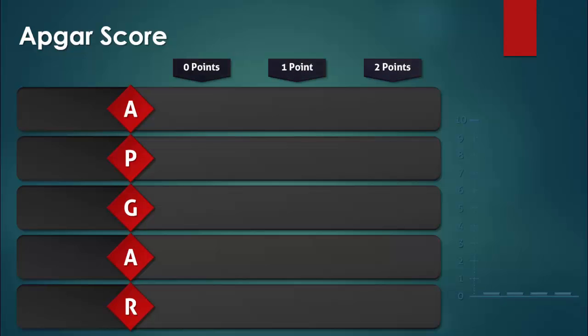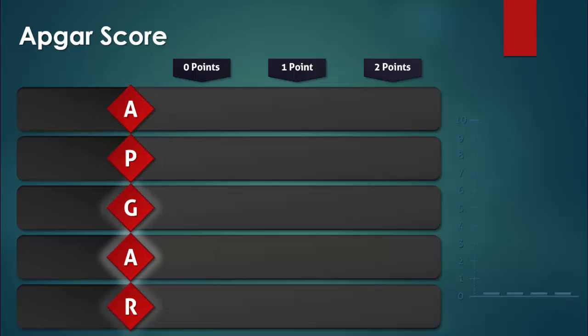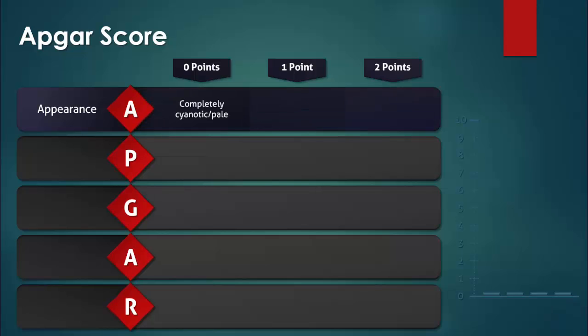The APGAR score is calculated by giving 0, 1, or 2 points per assessment in each of the five categories being evaluated. A stands for appearance and it refers to the level of oxygenation of the blood. Zero points are given if the baby is completely cyanotic or pale. One point is given for acrocyanosis, which is a cyanotic discoloration of the extremities. Two points are given if there is no cyanosis at all.